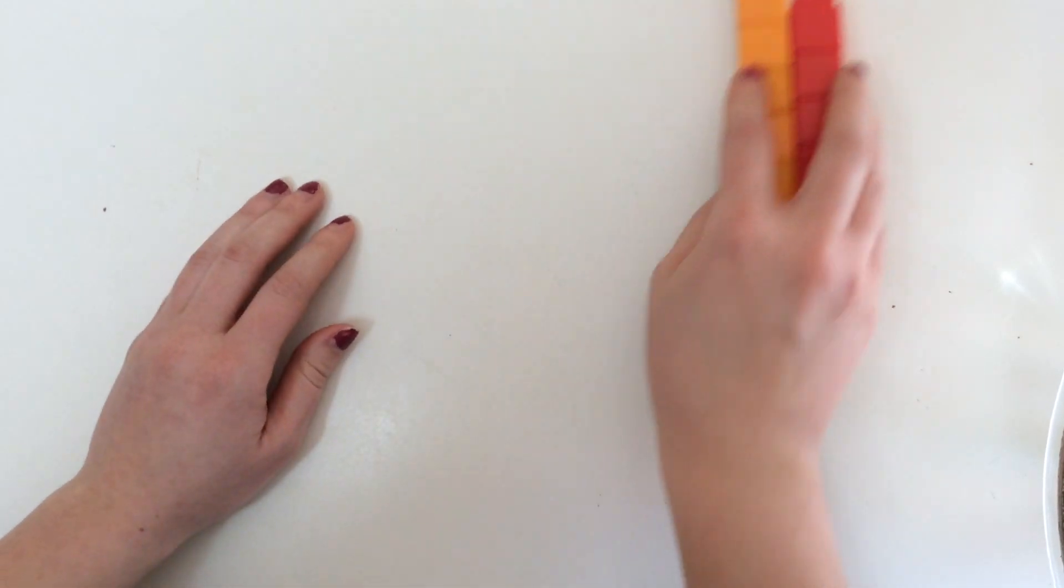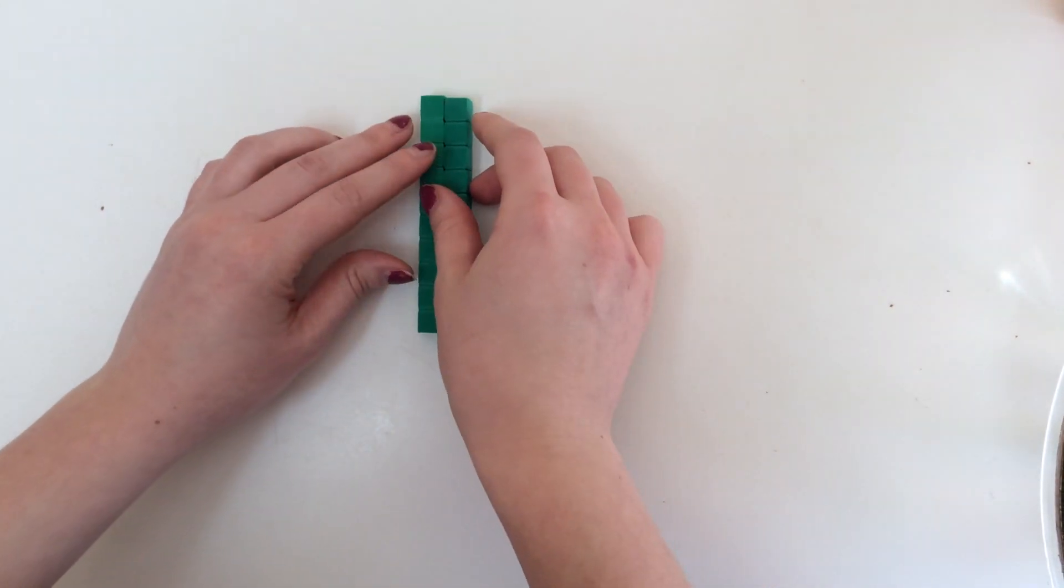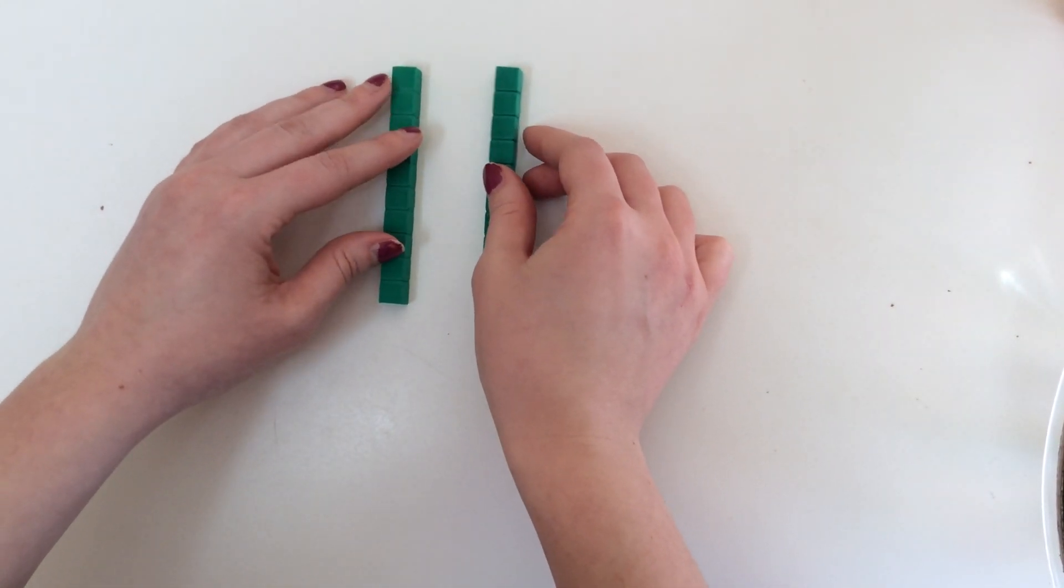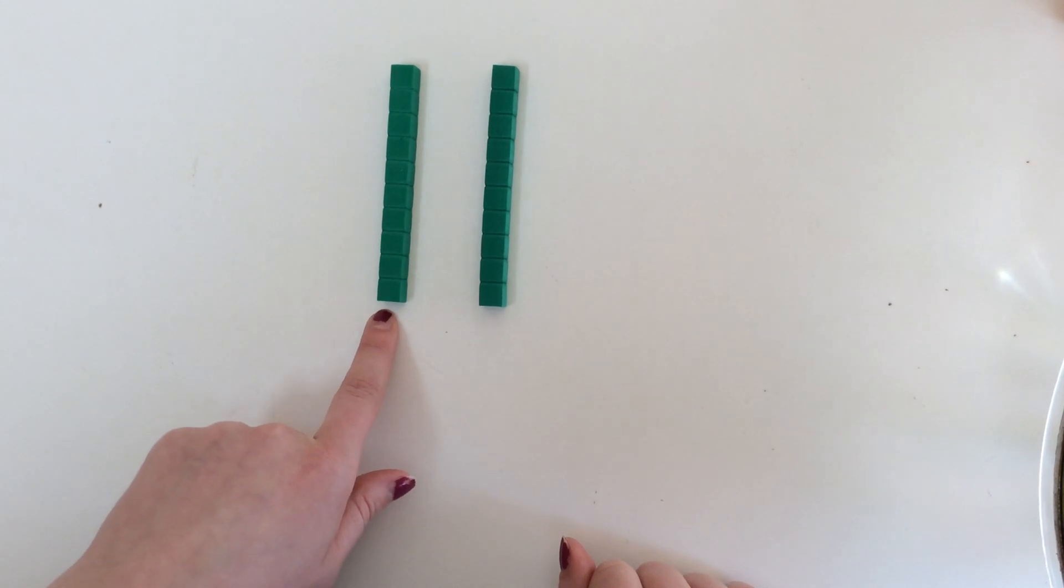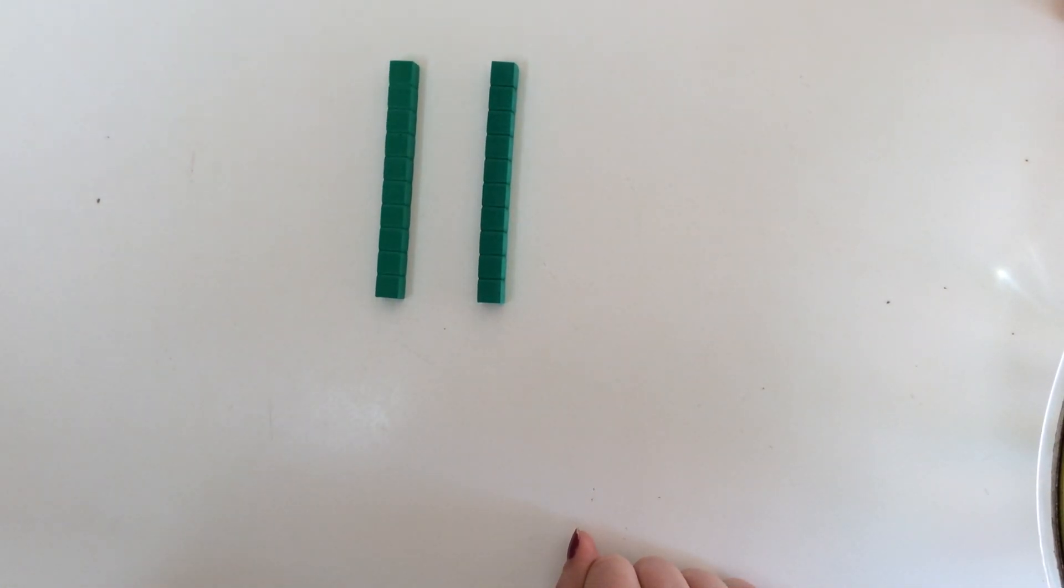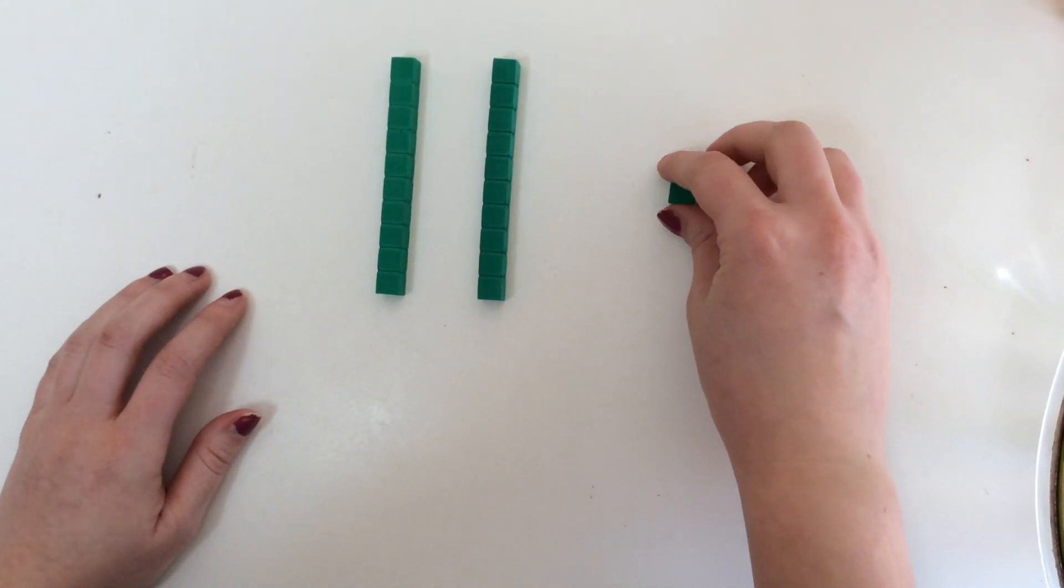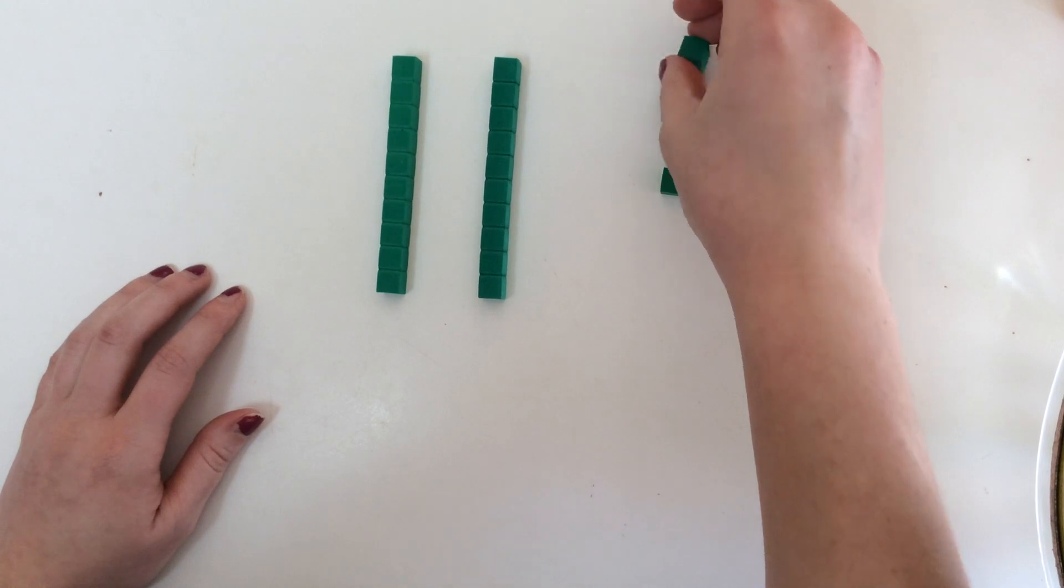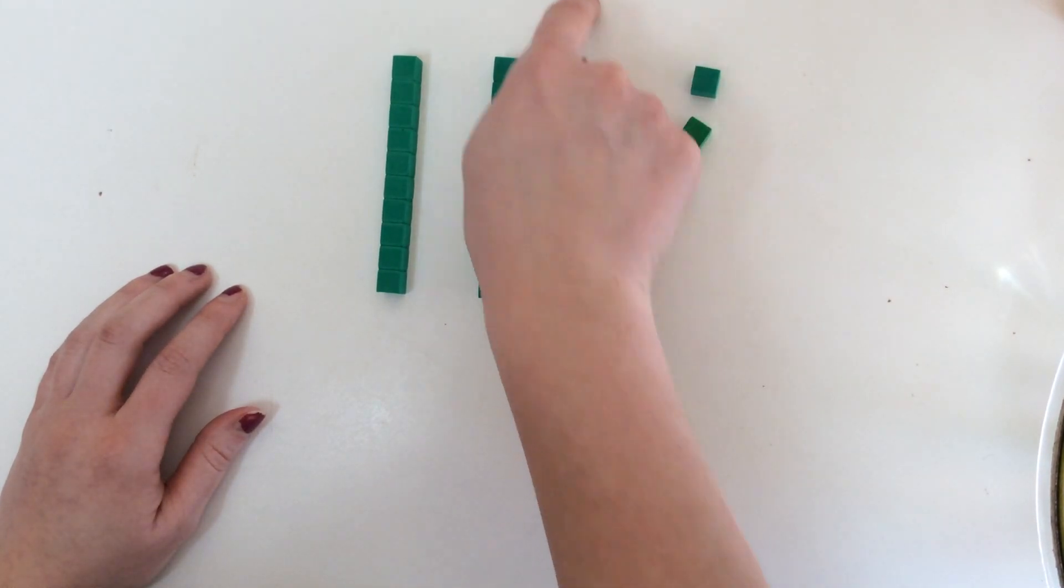Alright, what if I have two tens here? How many does that give us? Let's count: 10, 20. And if I add a couple cubes here—I have three cubes here—that gives us 23.